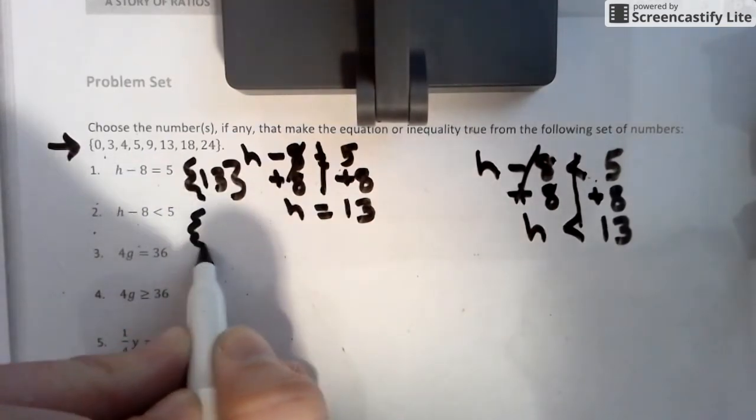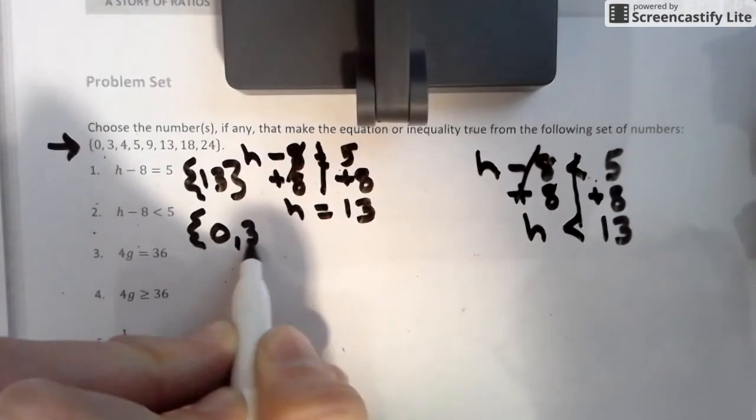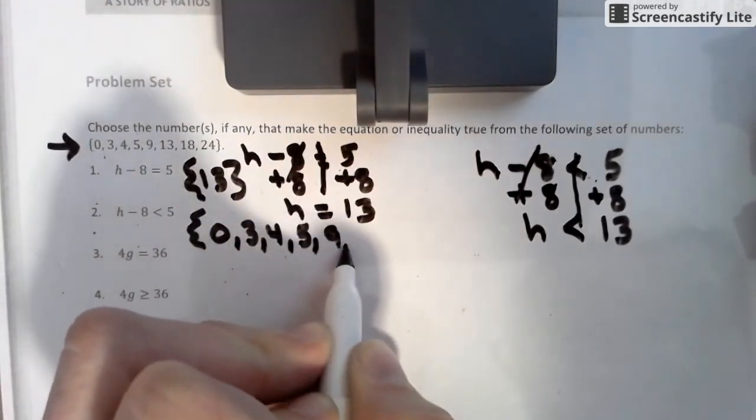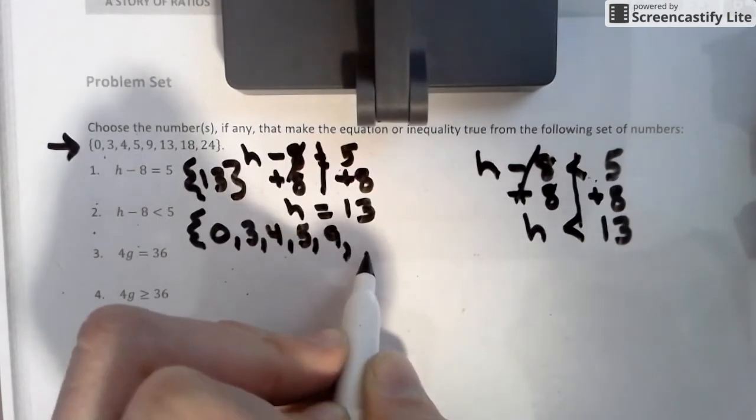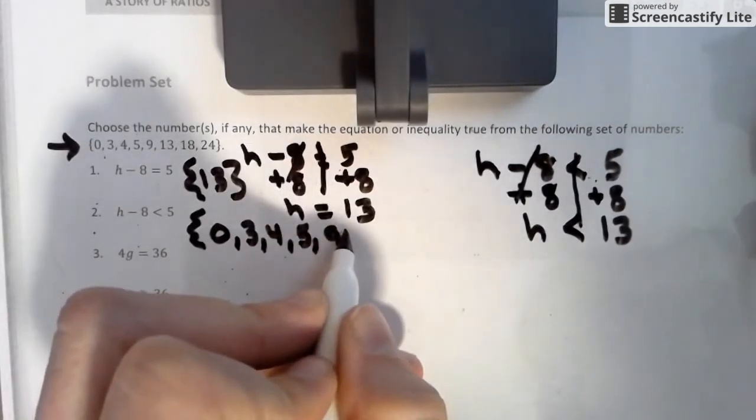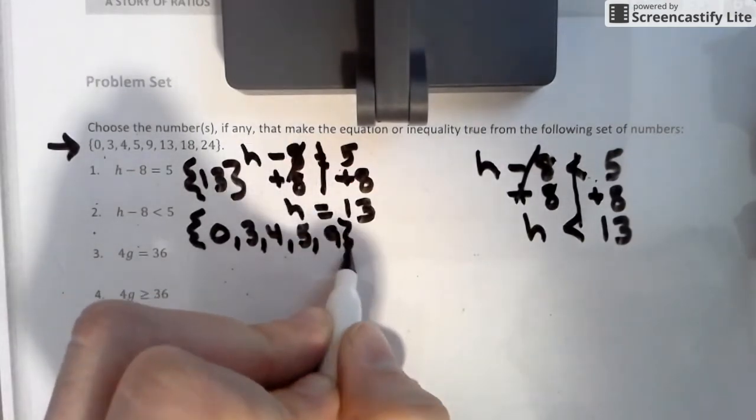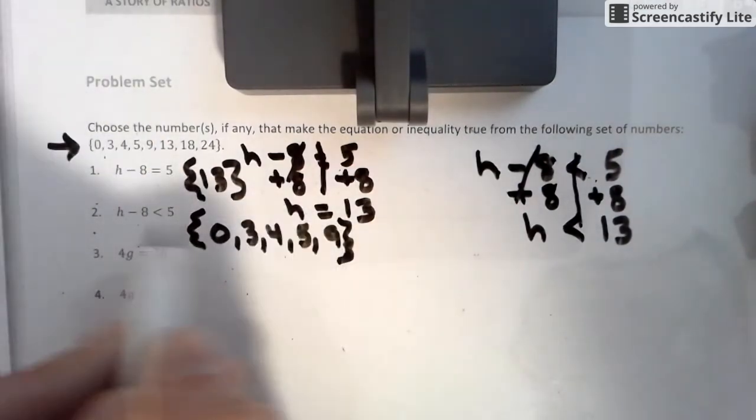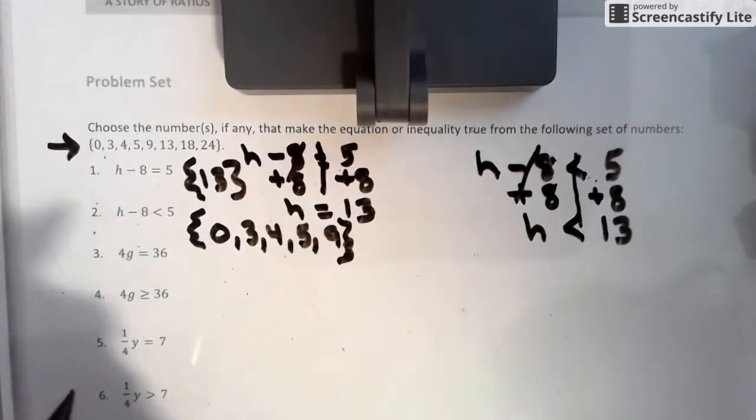Is zero less than 13? Yes. Is three? Yes. Is four? Yes. Five? Yes. Nine? Yes. Thirteen? No. So why? Because 13 is not less than 13. Thirteen is 13. So all of these numbers can be in that solution to that inequality.